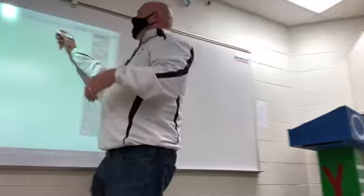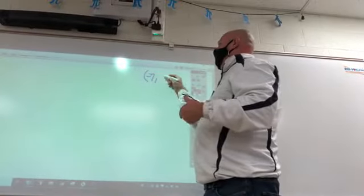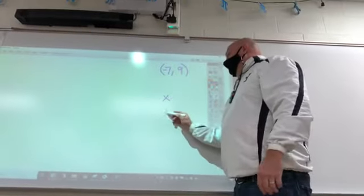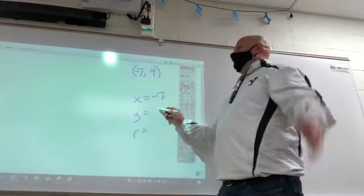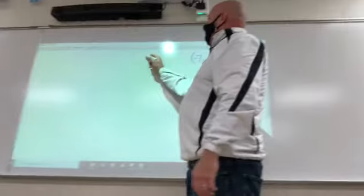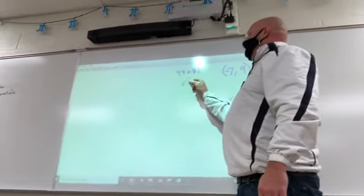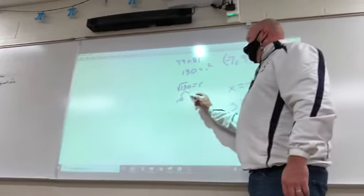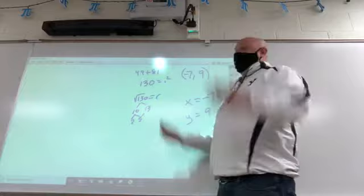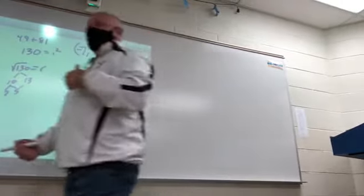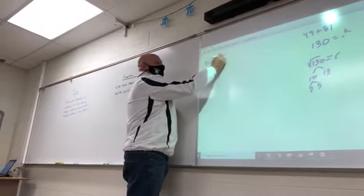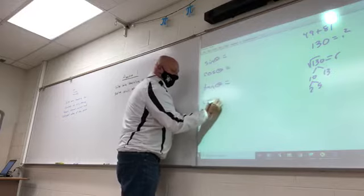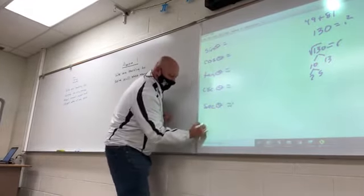Give me a point. Let's do negative 7, 9. So x is negative 7, y is 9. I've got to find my r: 49 + 81 = 130, so r equals the square root of 130 — which doesn't simplify since 130 = 2 × 5 × 13. You're going to have to find sine, cosine, tangent, cosecant, secant, and cotangent — all six for every question.